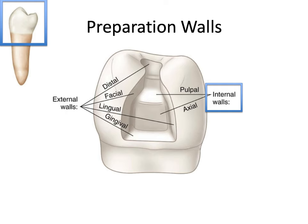Now let's move to the internal walls, which are easy because there are only one or two names to know. The wall we've been looking at this entire time is the axial wall, because it runs parallel to the long axis of the tooth. And finally, we have the pulpal wall — more commonly the pulpal floor — because it lays flat along the base of the prep and runs just above the pulp chamber. In a Class 1 restoration, you won't have the proximal box area, so the only internal wall is the pulpal floor.